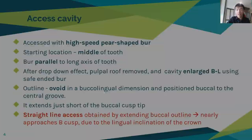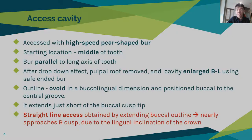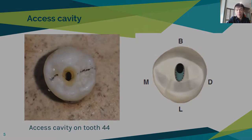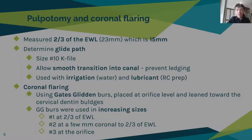For the access cavity, I used a high-speed pear-shaped burr in the middle of the tooth and parallel to the long axis of the tooth. After the drop-down effect, the cavity was enlarged buccolingually using a safe-ended burr, and straight-line access was obtained by extending the buccal outline just nearly approaching the buccal cusp, as you can see here in the picture and also in the diagram.